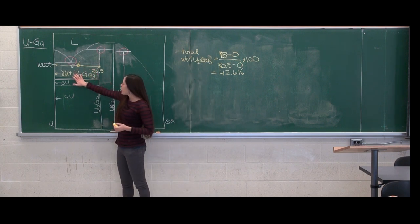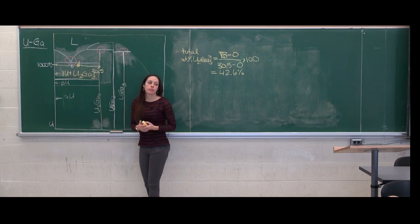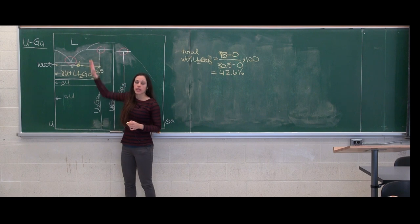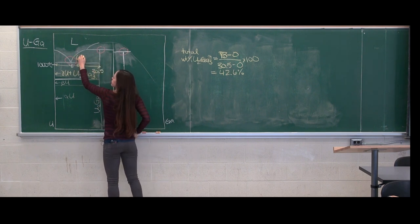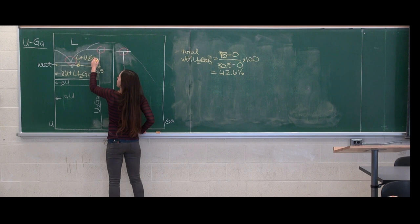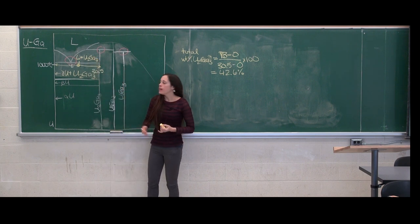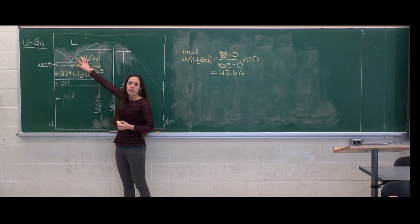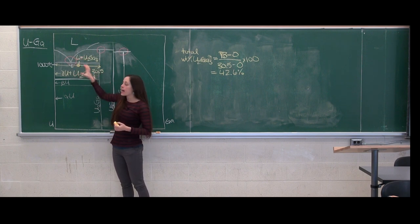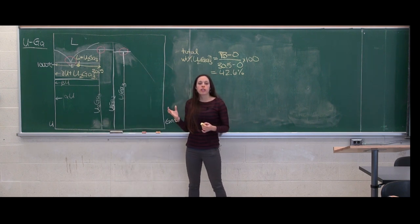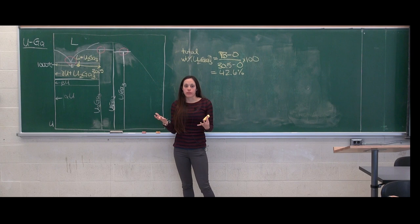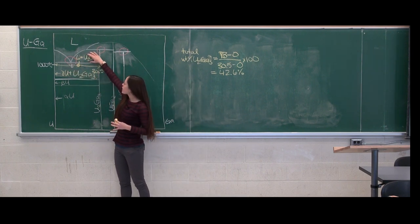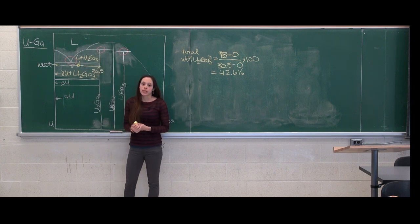In this region we have two types of uranium-2-gallium-3. We have primary uranium-2-gallium-3, which solidified in the two-phase region where we have liquid plus uranium-2-gallium-3. Then, once we cross past the eutectic, all of the remaining liquid will solidify at the eutectic composition and give us our total amount of eutectic uranium-2-gallium-3. So to find just the eutectic uranium-2-gallium-3, we need to first find the amount of primary uranium-2-gallium-3.